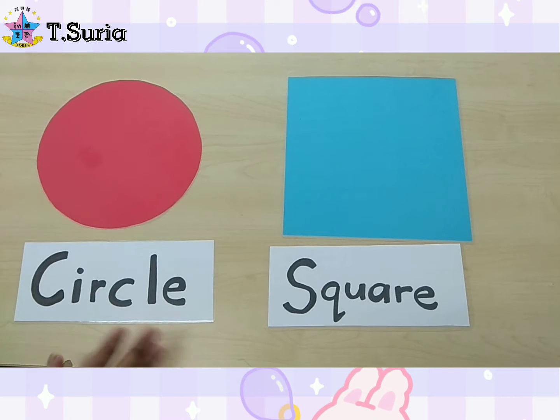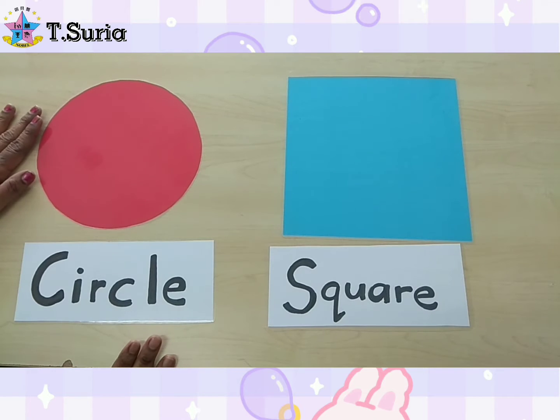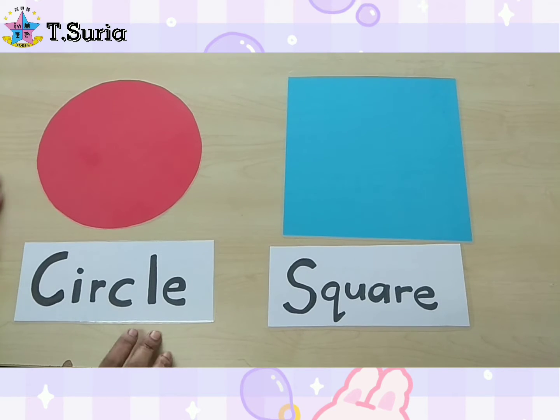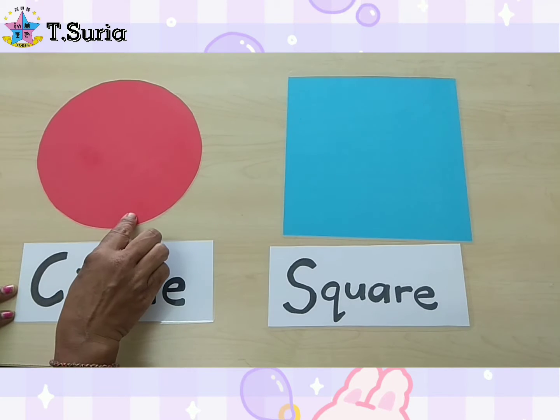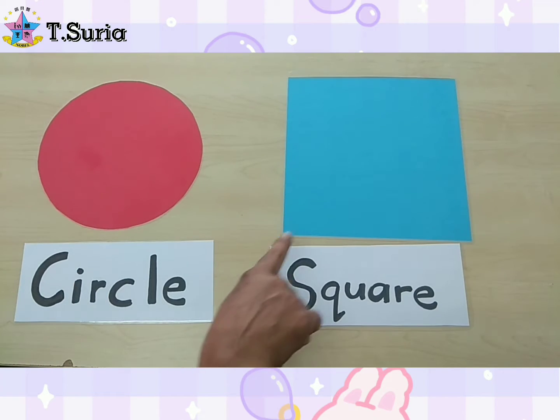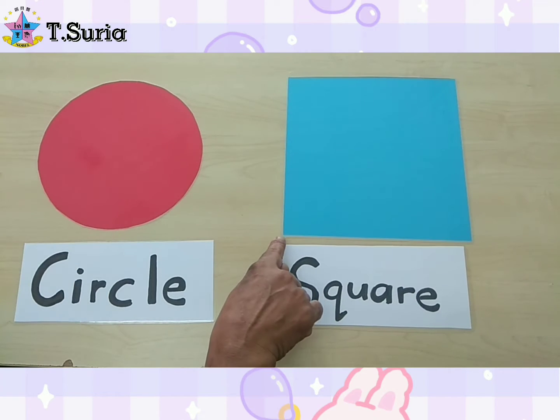Okay, children. What shape is this? This is a circle. Circle, circle!